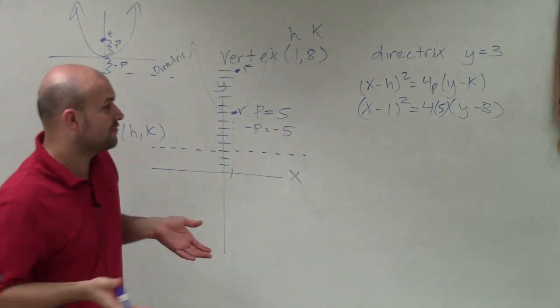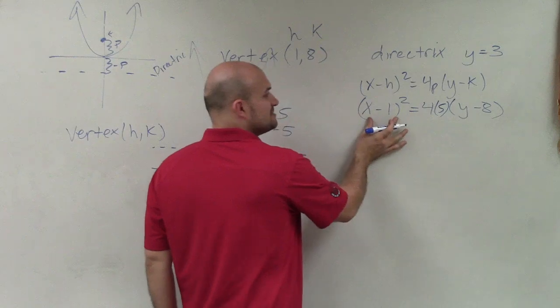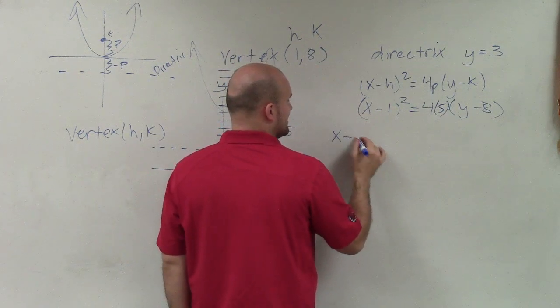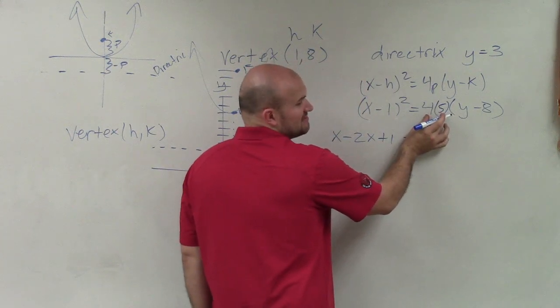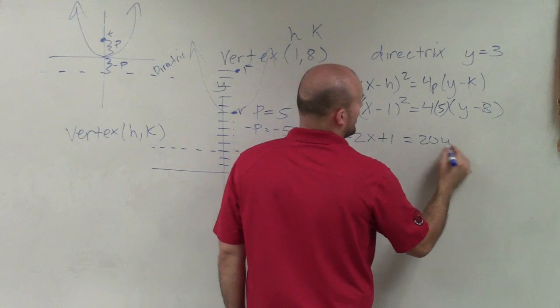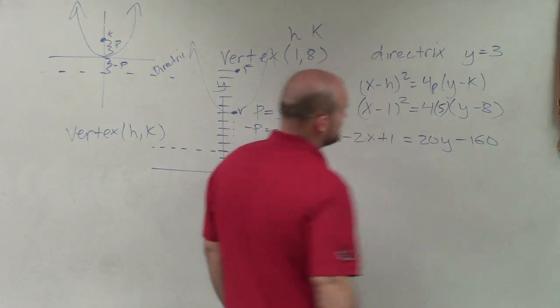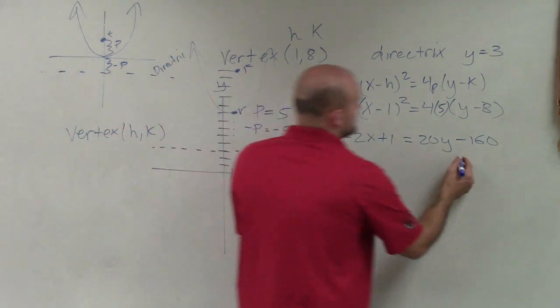OK, so now to write the standard form equation, what I'm going to do is I'm going to expand this and then distribute this. So when I expand this, I have x - 2x + 1 = 4 times 5 is 20. So that's going to be 20y. And that'd be negative 160. Now, to be able to solve for y, I've got to add 160 to both sides.